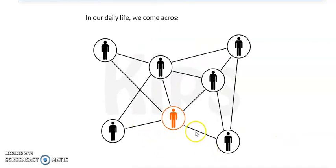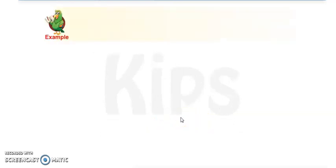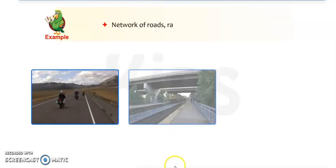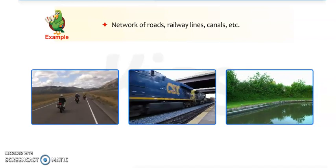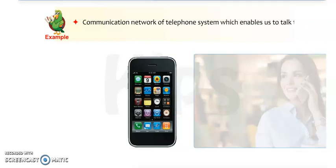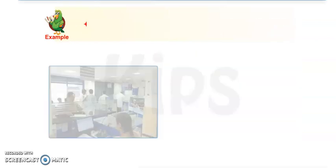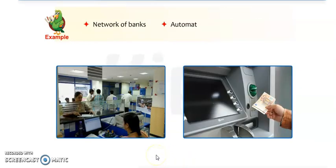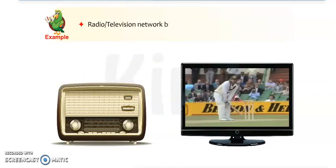In our daily life, we can encounter different types of networks. Let us understand this concept by some examples: network of roads, railway lines, canals, etc. — all are different types of networks. Communication networks of television systems enable us to talk to anyone, anywhere, anytime. Networks of banks and automated teller machines (ATMs) are also examples of different types of networks.